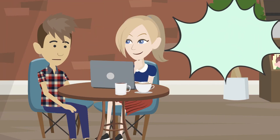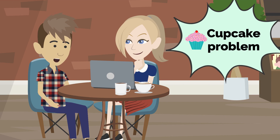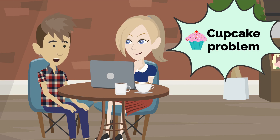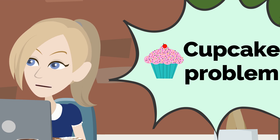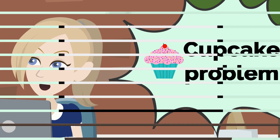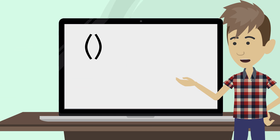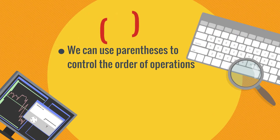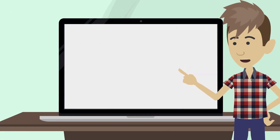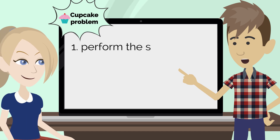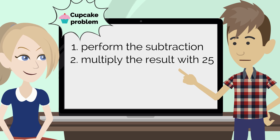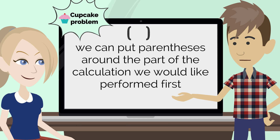Great! Now, coming back to our original cupcake problem, do you understand why we got 220 as the answer? Yes, but then what is the solution? Parentheses, or round brackets. When programming in Python, we can use parentheses to control the order of operations. In the cupcake problem, we would like Python to first perform the subtraction and then multiply the result with 25. We can put parentheses around the part of the calculation we would like performed first.